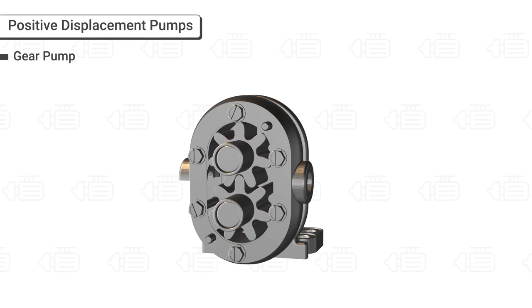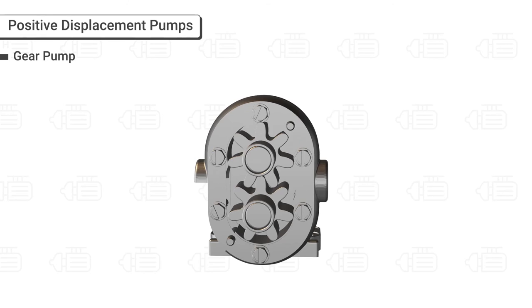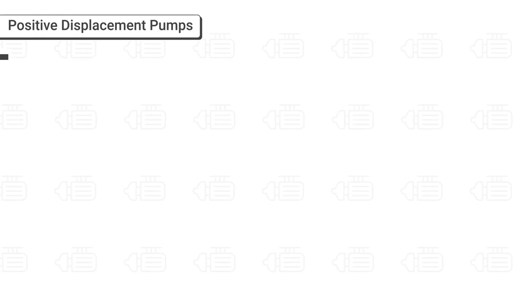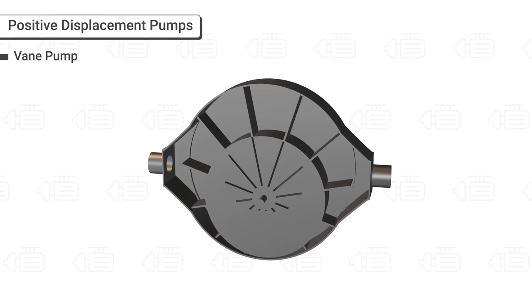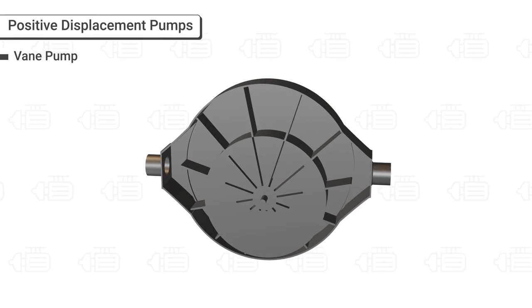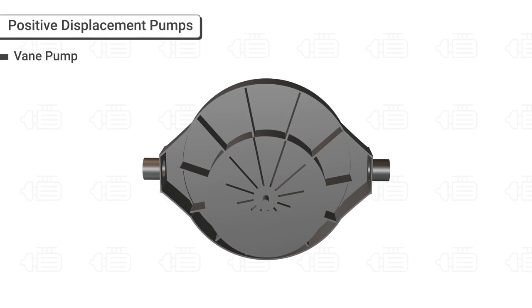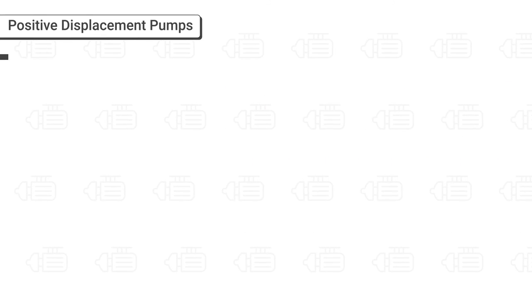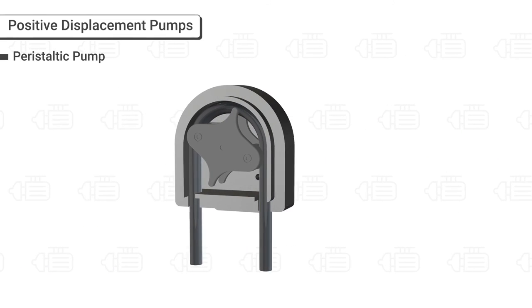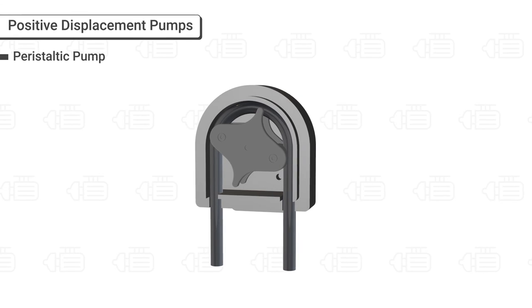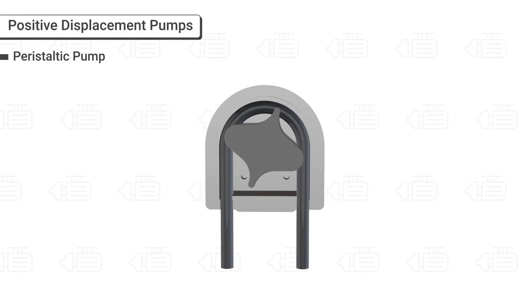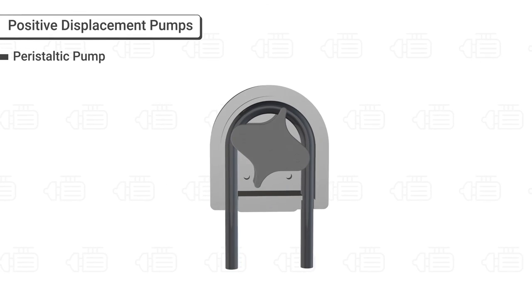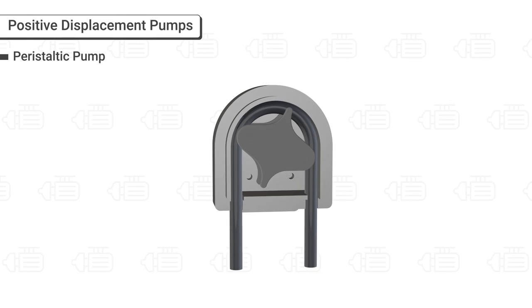Gear pump, which uses gears to pump fluid by displacement. Vane pump, which consists of vanes mounted to a rotor that rotates inside a cavity and moves the fluid. Peristaltic pump, consisting of a single piece of hose which is compressed via rollers or shoes, moving fluid from the inlet to the outlet of the pump.